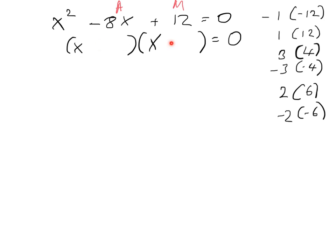Now, to get the terms that go in here, we have to ask ourselves two questions. First of all, what terms multiply to give you 12? That's why I write the M up here. So what terms multiply to give you 12, plus 12, and what terms add to give you minus 8?